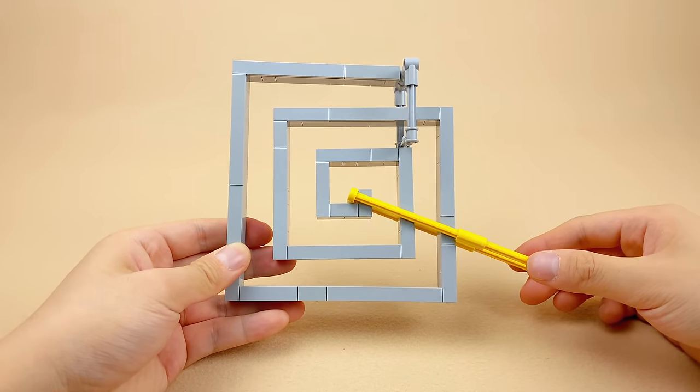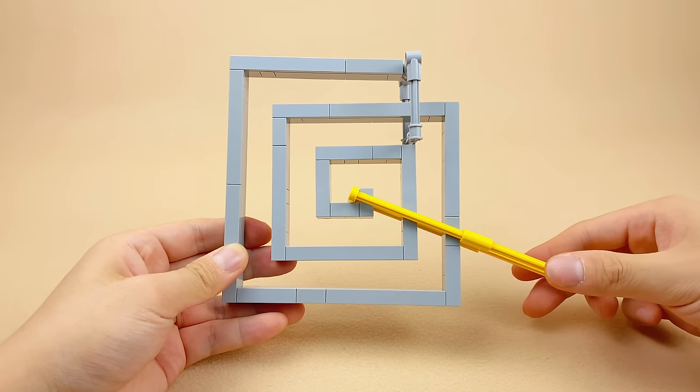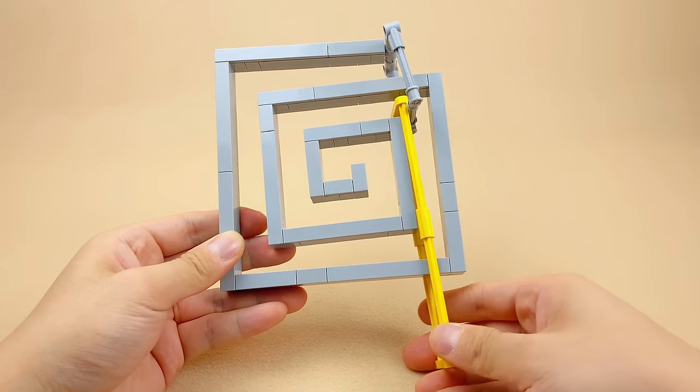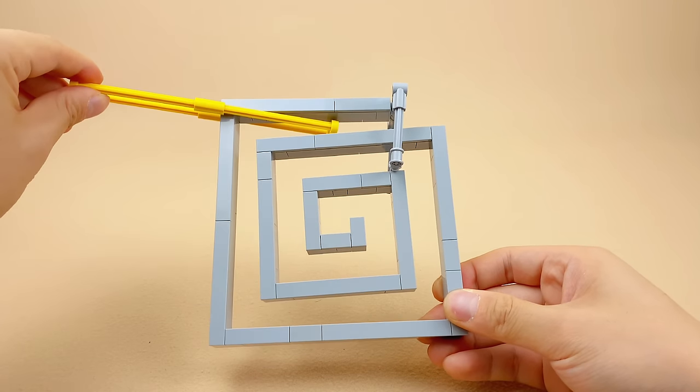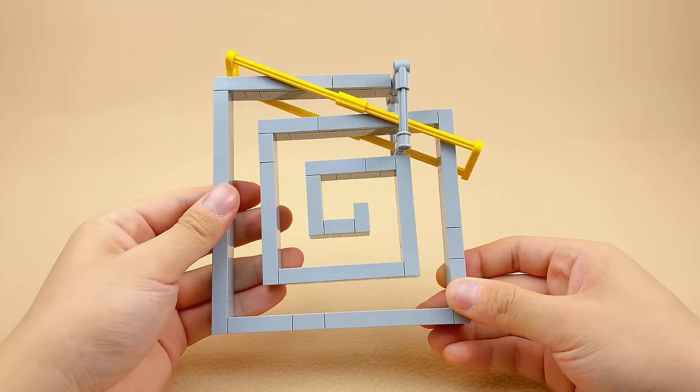This puzzle is called the spiral. The goal is to remove the yellow handle. The first attempt is to simply follow the curl, but you will find it blocked by the square at the end of the spiral. So, we have to start over.